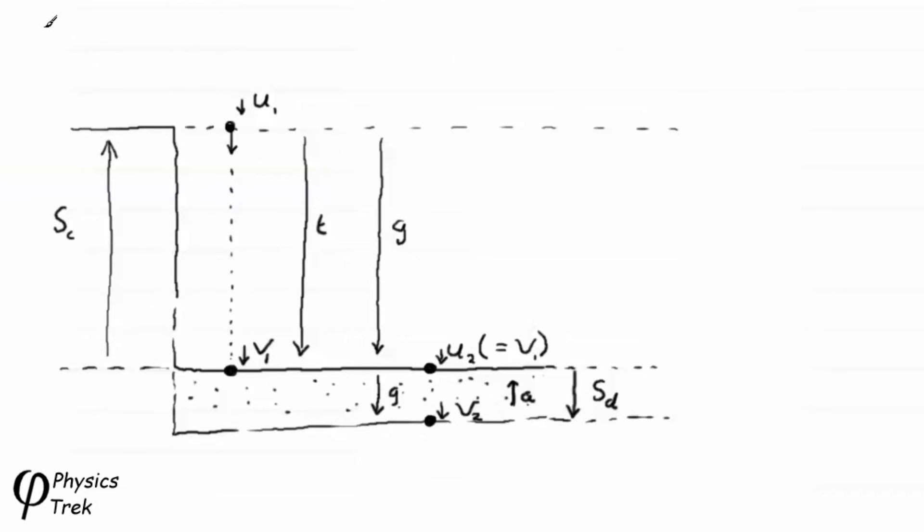So let's give some value to these symbols. U1 is equal to zero meters per second. It's the initial velocity. V1, the final velocity, we need to calculate. SC, the height of the cliff, we also need to calculate. T is equal to 2.5 seconds. G, the acceleration due to gravity, is equal to 9.8 meters per second per second.